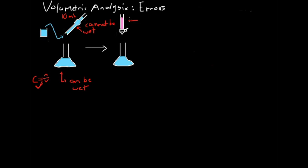Another error is if the burette is wet before we add the solution to it. That's going to dilute the solution, and we need a certain number of moles to be dropped into the conical flask for the reaction to reach the equivalence point. The number of moles required is constant, so if the burette solution is diluted, we're going to have to release a larger volume of solution to deliver the needed moles. So if the burette is wet before we fill it, our titer is going to be larger. So the burette can't be wet.